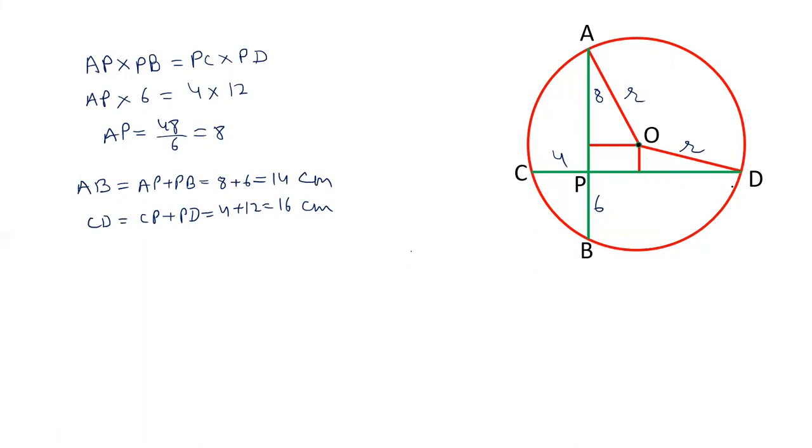This 12 is PD. From P to D is 12. And this from here to here is 4. Similarly, this one, A to P is 8. And this is 6, P to B.